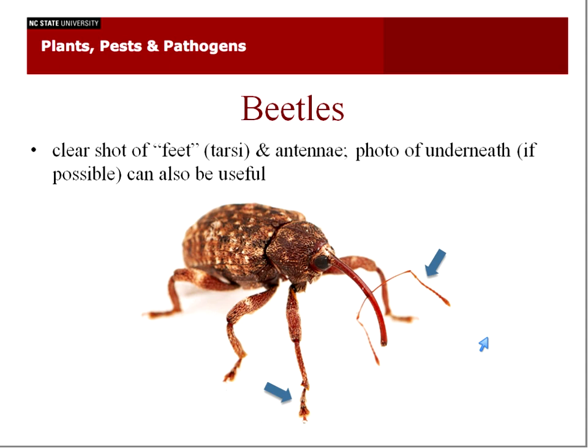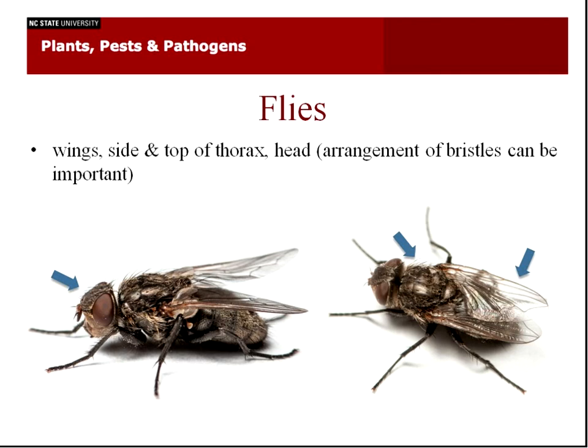For beetles, a clear shot of the feet or tarsi, the antennae, and a photo of the underneath — the belly of the insect if possible — are useful. Beetles vary with their legs, feet segments, and antennae. These are very good ways to identify beetles.